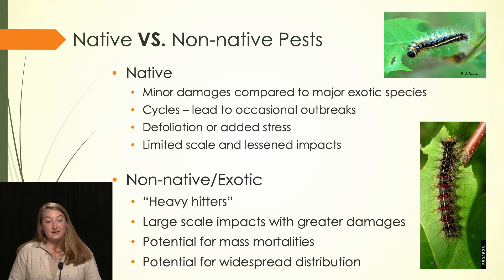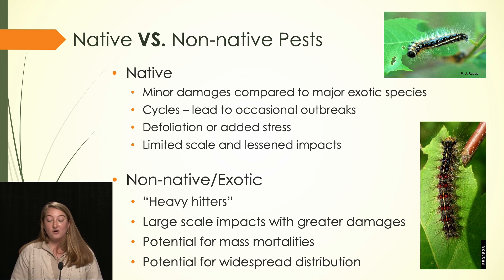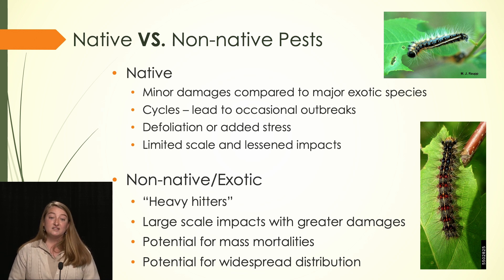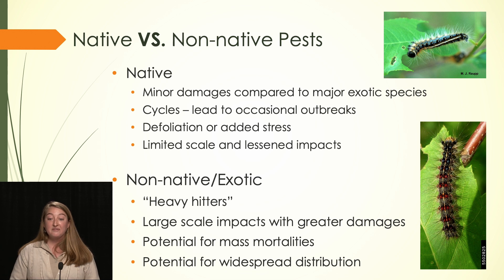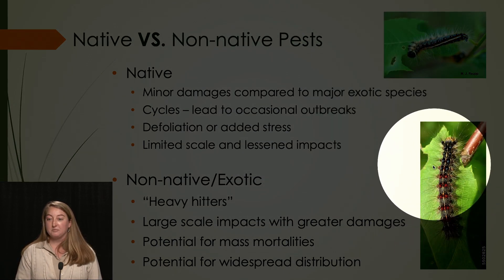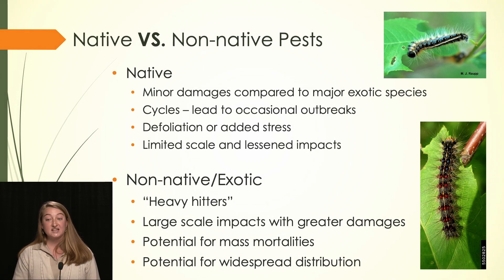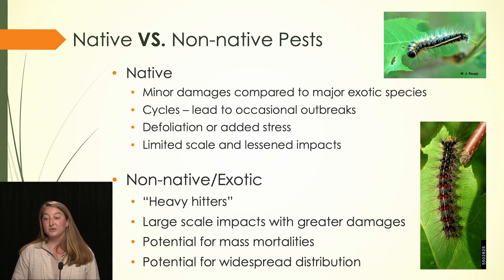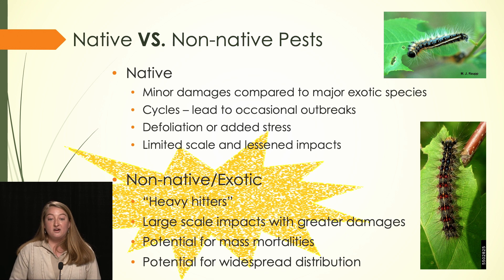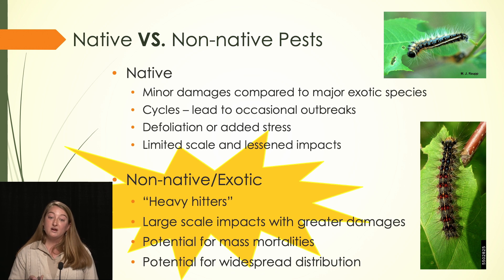Whereas when we talk about non-native, exotic, or invasive species — all three terms mean the same thing — these are what I call our heavy hitters, causing the greatest amount of damage and the most impacts in our region. They lead to mass mortality: a lot of tree death across the landscape, with the potential for widespread distribution. The example here is the gypsy moth caterpillar, devastating oak-dominated forests in our eastern state counterparts. We really don't want that bug here. These reasons and many more are why we're so focused on tracking and trying to eradicate these exotic insect pests.